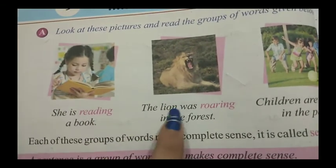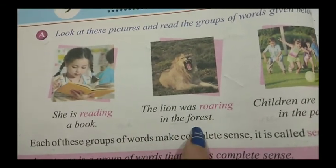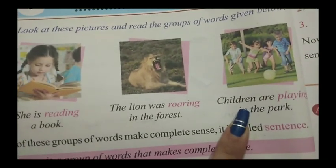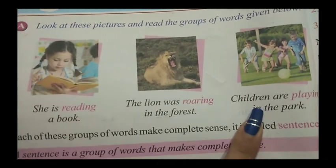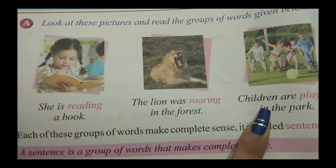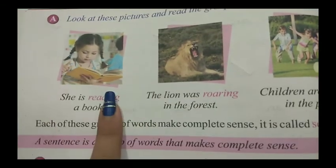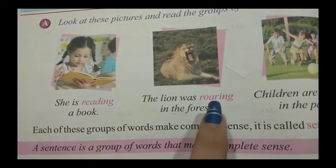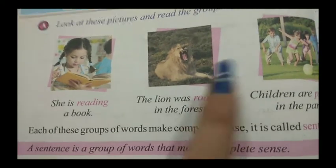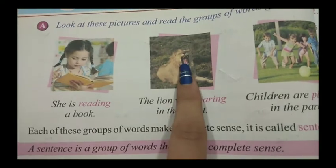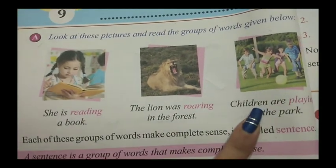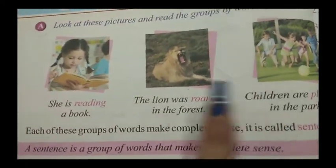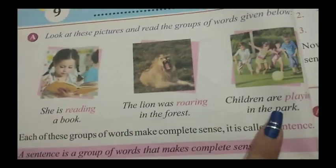Now here is the lion — the lion was roaring in the forest. Children are playing in the park. In these three pictures we can see which activity is happening. In the first picture, the girl is reading. In the second, the lion was roaring. In the third picture, the children are playing in the park. So here we have three actions: reading, roaring, and playing.